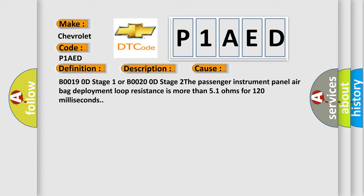B00190D Stage 1 or B00200D Stage 2. The passenger instrument panel airbag deployment loop resistance is more than 51 ohms for 120 milliseconds.